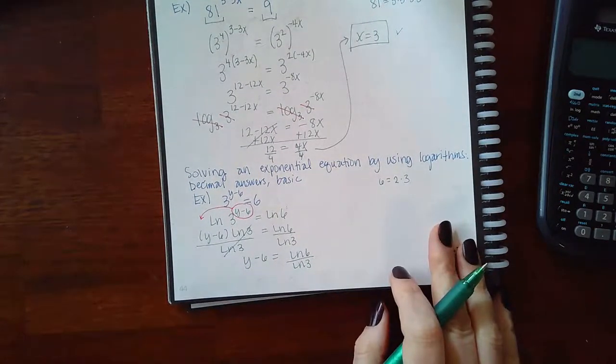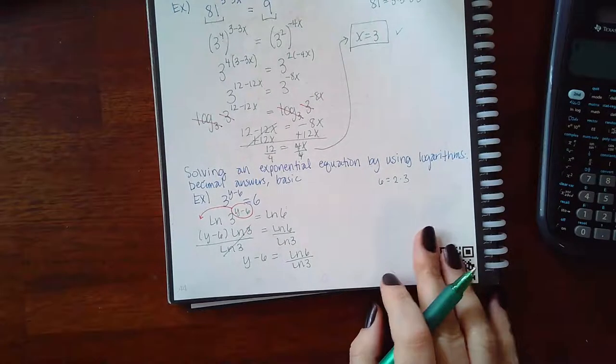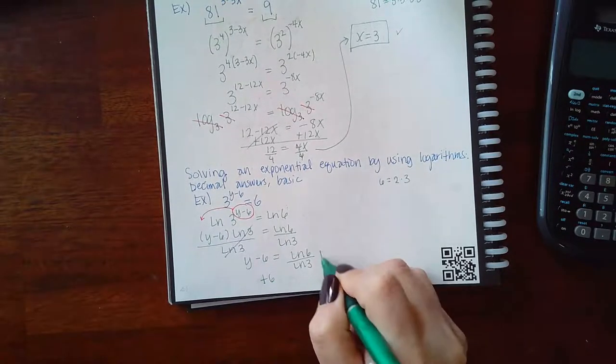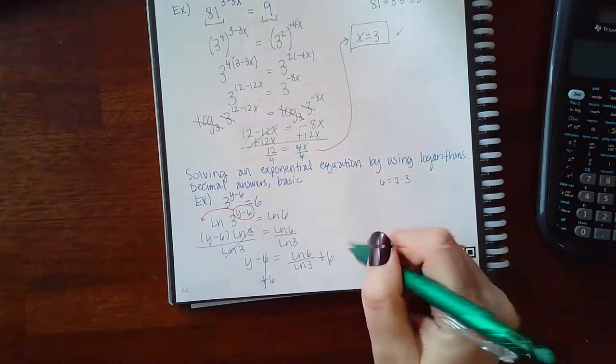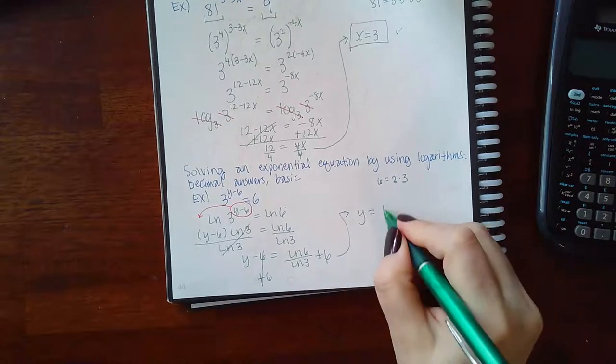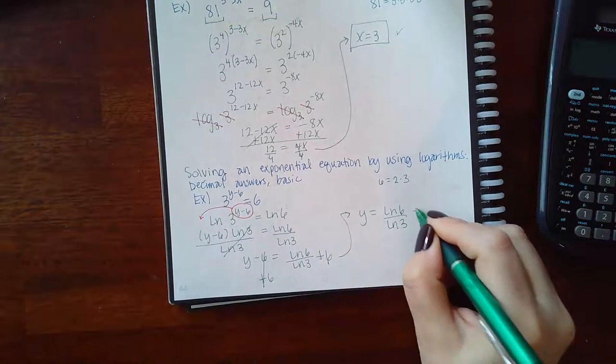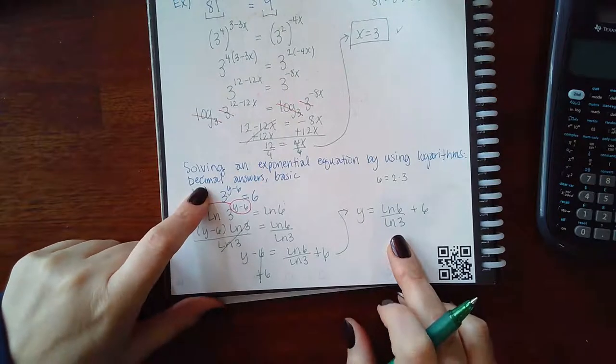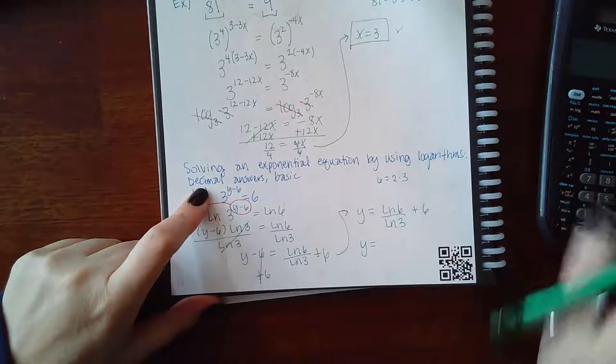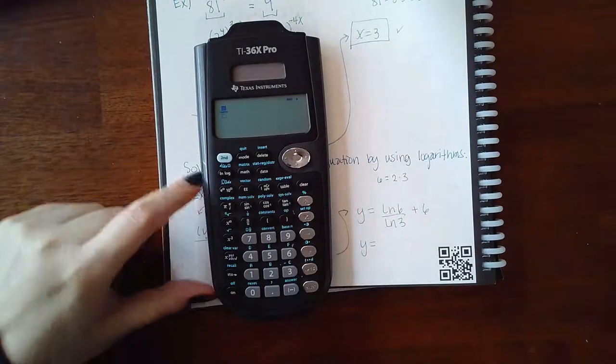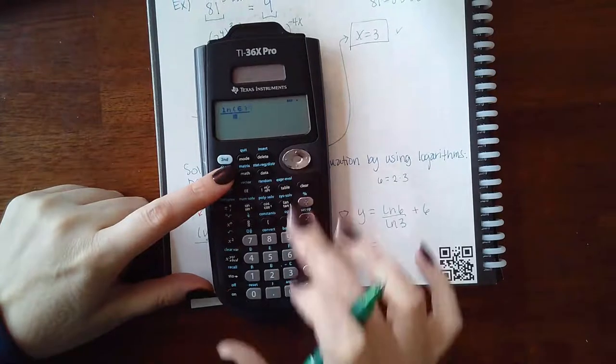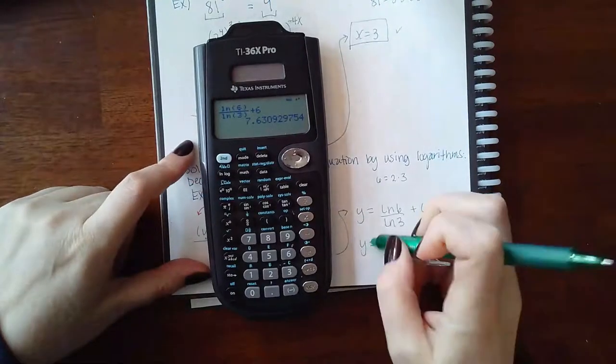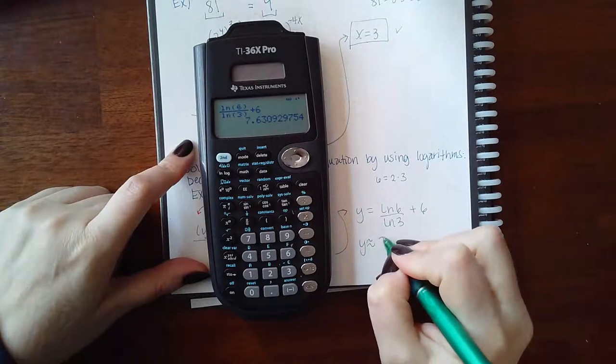Then I get Y minus 6 equals LN of 6 over LN of 3. Do not type things in your calculator until you have your final answer. That's the only way to guarantee that your final answer is correct. So if I need to continue solving for Y, I'm going to add 6 to both sides. On the left-hand side, it cancels, so I have Y by itself. This is the exact answer. However, in this problem, it wants to know the decimal answer. So we'll go ahead and type that into our calculator. Fraction LN of 6 over LN of 3 and then plus 6 on the side. And we'll round to two decimal places, so we get that it is approximately 7.63.